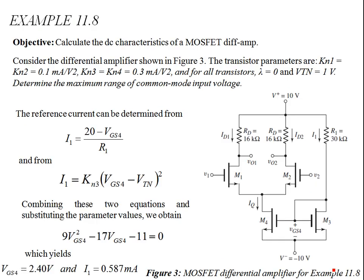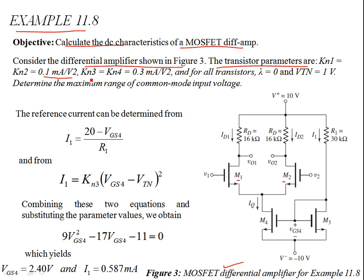Let's consider example 11.8 from the course text. The objective is to calculate the DC characteristics of the MOSFET differential amplifier shown in Figure 3. The transistor parameters are: KN1 and KN2 are 0.1 mA/V², KN3 and KN4 are 0.3 mA/V². For all transistors, the channel length modulation parameter lambda equals zero, and the threshold voltage is the same for all transistors.